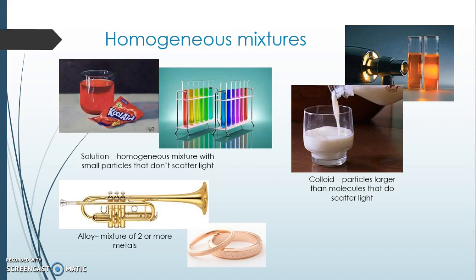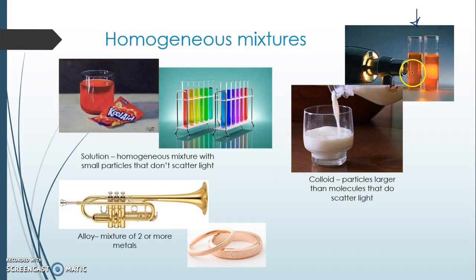To tell a solution from a colloid, shine a light through two samples that look the same. In a solution, the light doesn't scatter — it stays clear and translucent. In a colloid, the light is scattered, making it look cloudy. Milk is an excellent example of a colloid because the particles scatter light.